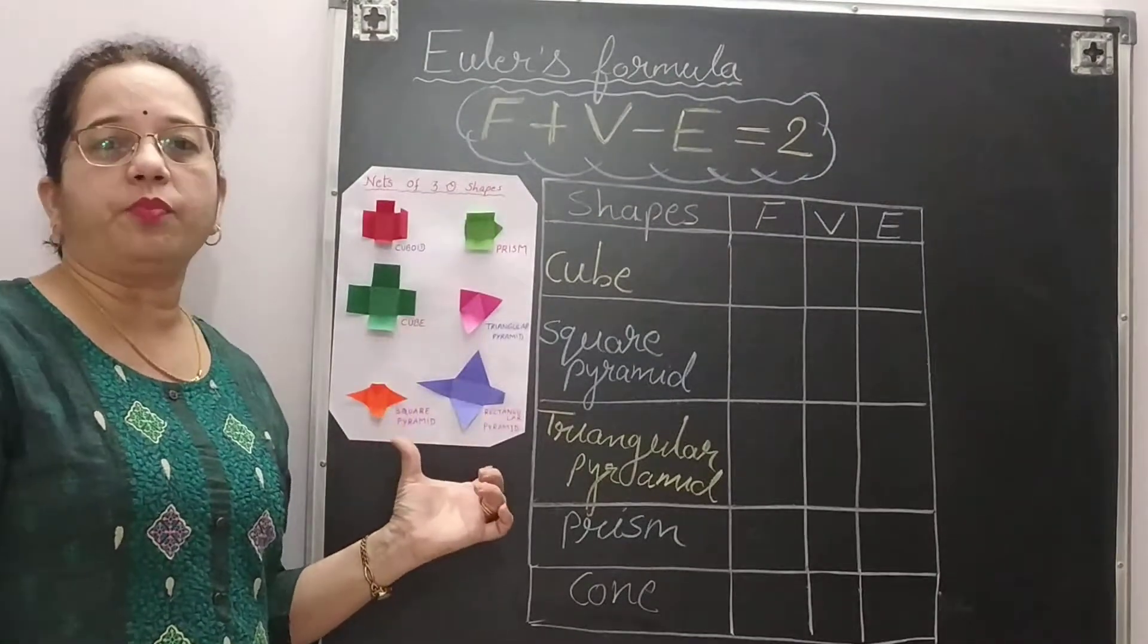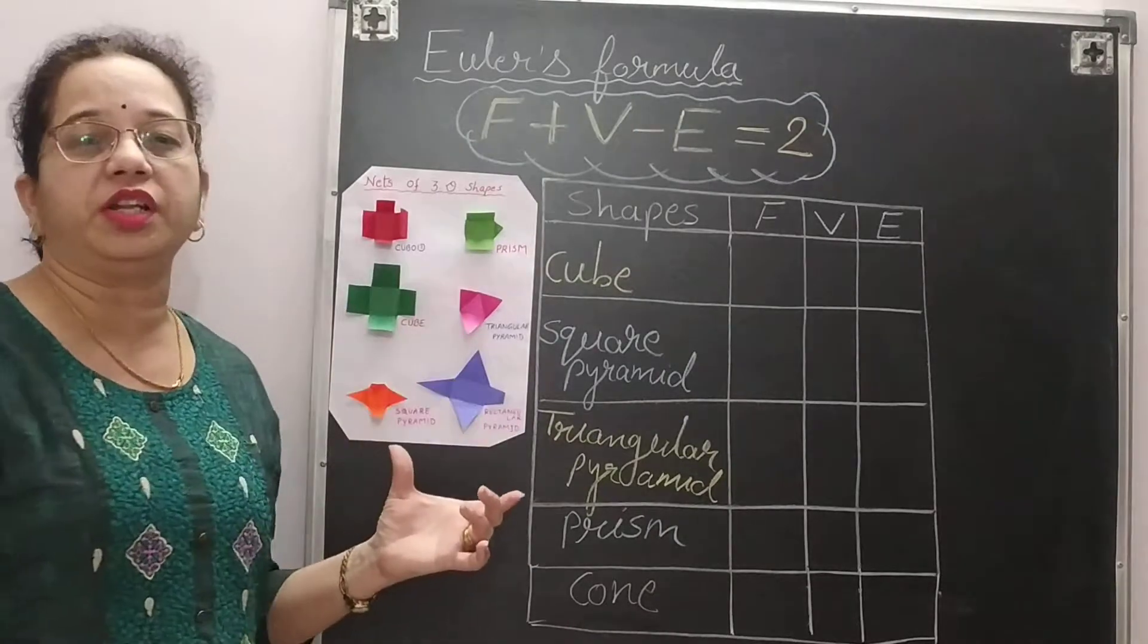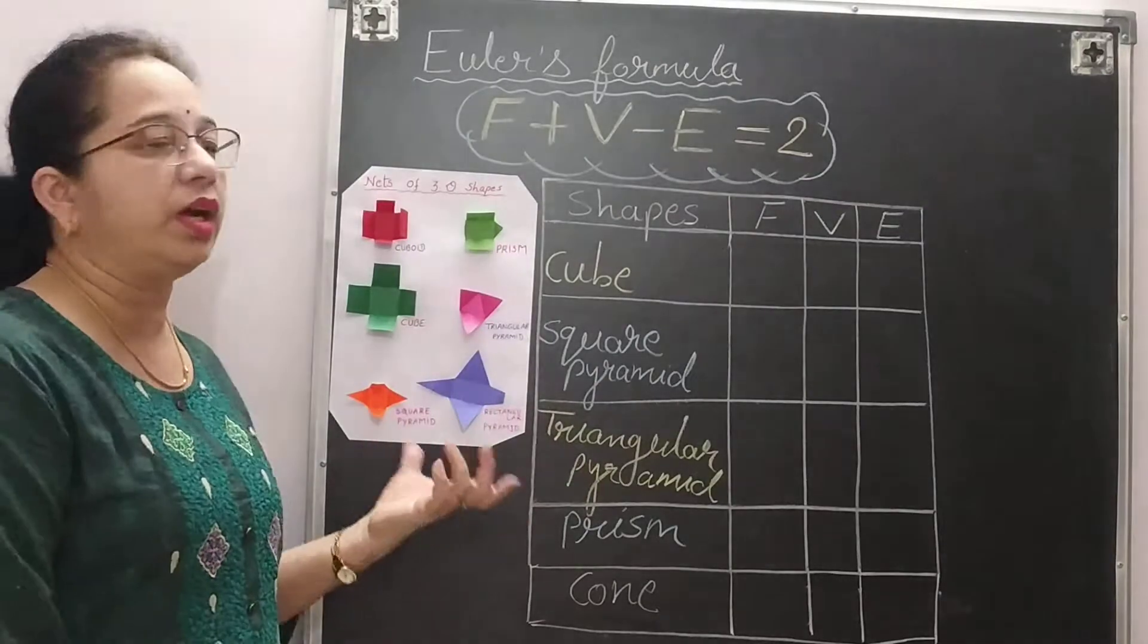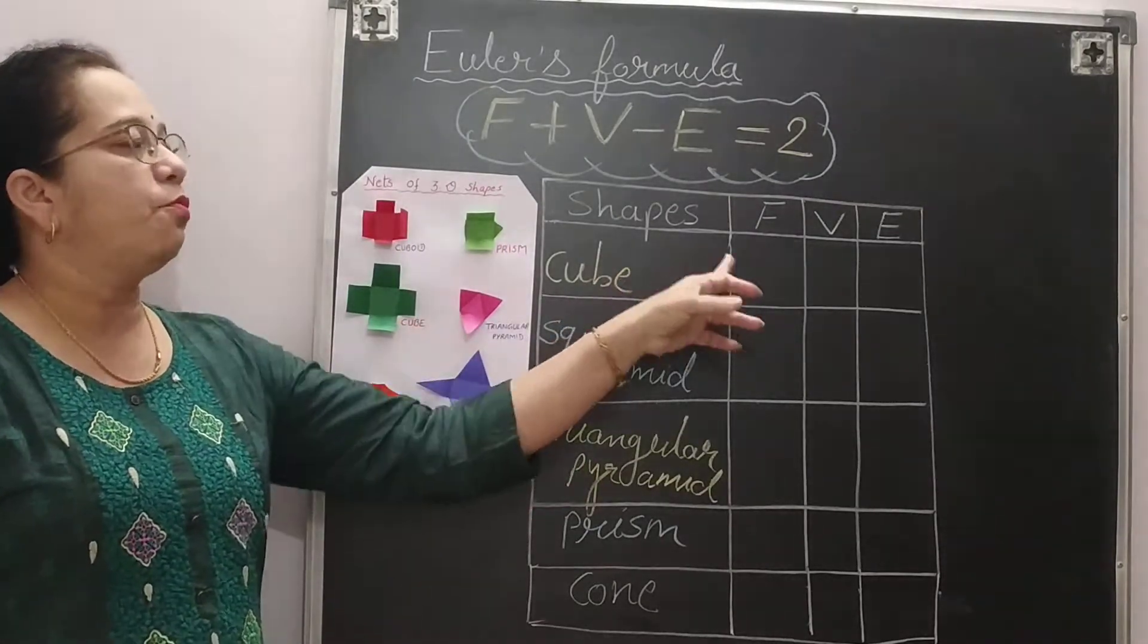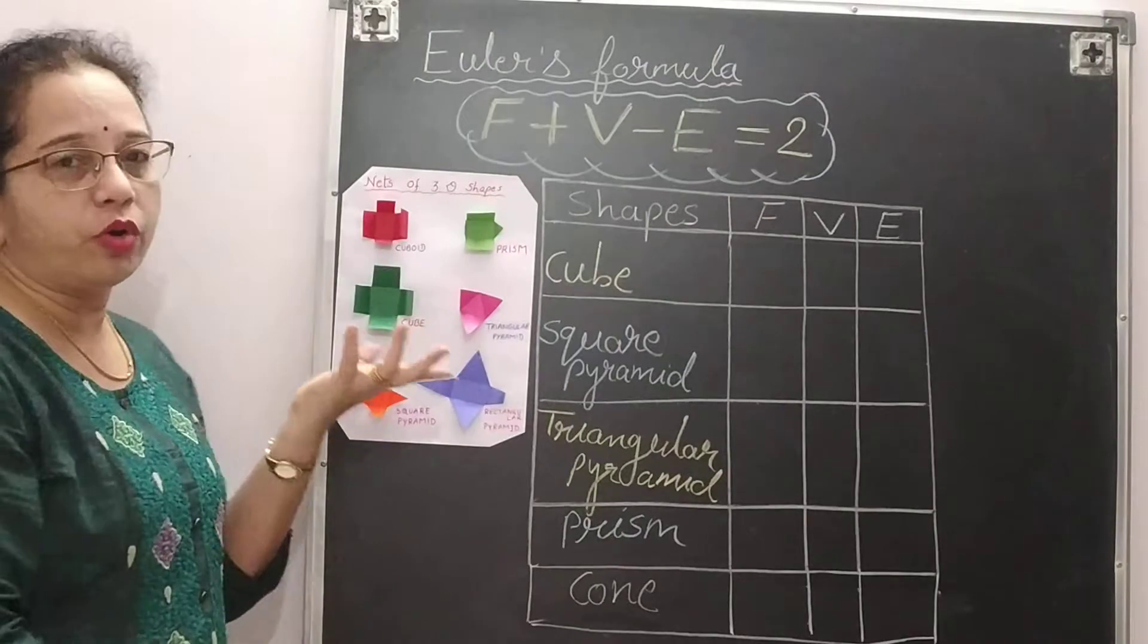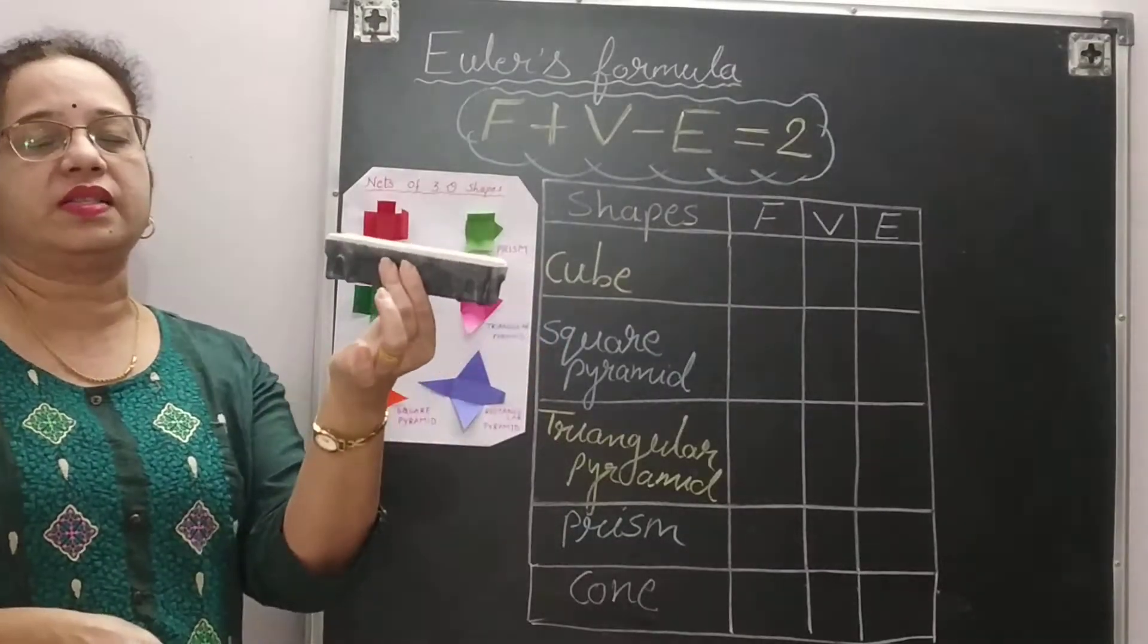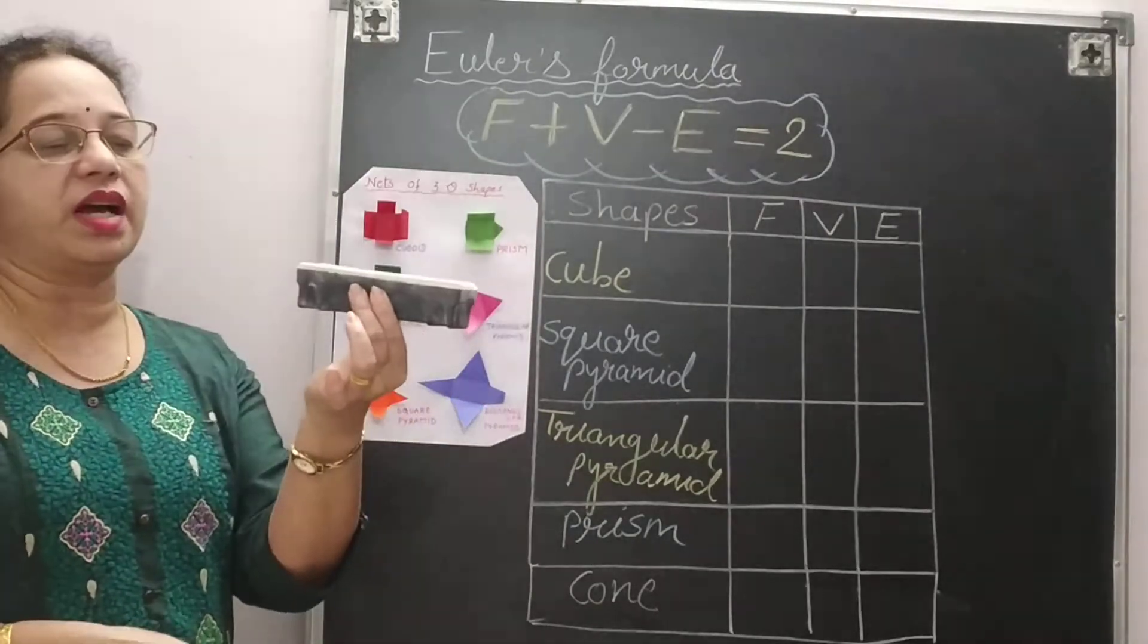Next, the 3D shapes. Already I have made one video on how to make these 3D shapes by paper folding activity, paper cutting activity. So we will use the same to find out the number of faces in a cube. This is a cube or you can see cuboid. You can take the example of this duster. This is the example of a cuboid.